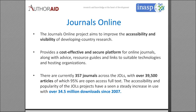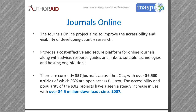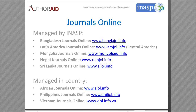Another original program is Journals Online, which aims to improve the accessibility and visibility of developing-country research. It provides a secure platform for online journals to feature their content, and we work closely with journal editors and in-country coordinators to ensure they have the capacity to run their journals effectively — building them up to the quality level expected of high-impact journals. We currently have 357 journals, over 39,000 articles, and 95% of those are open access full text.